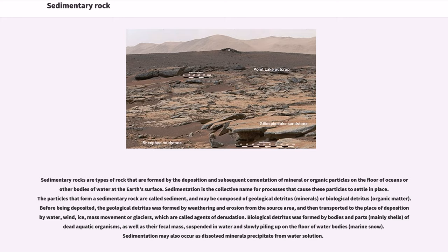Sediment may be composed of geological detritus or biological detritus. Before being deposited, the geological detritus was formed by weathering and erosion from the source area, and then transported to the place of deposition by water, wind, ice, mass movement or glaciers, which are called agents of denudation.